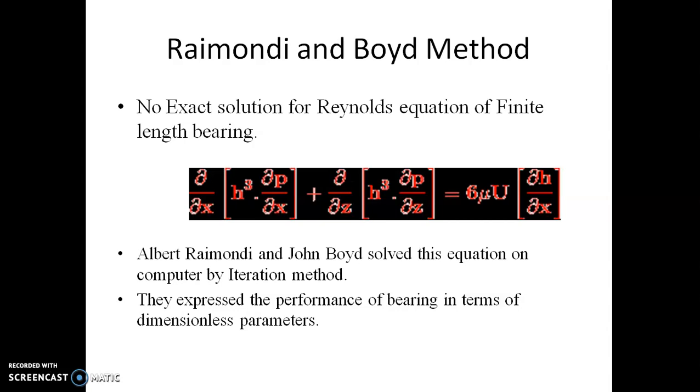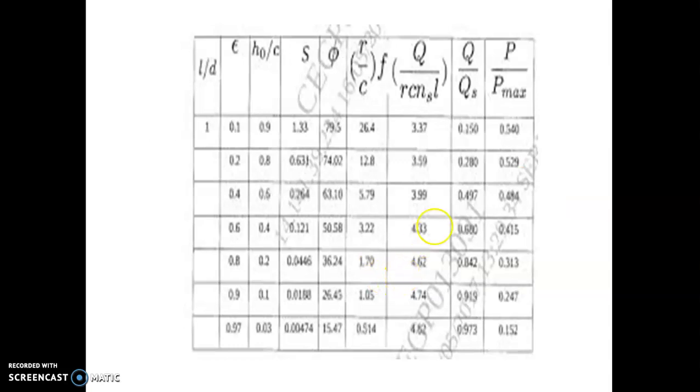These dimensionless parameters are available in the form of chart or table. These charts and tables are available for full and partial journal bearing having L by D ratio as infinity, 1, 1 by 2 and 1 by 4. Look at this table. Here L by D ratio is given 1 and the different parameters are mentioned here.